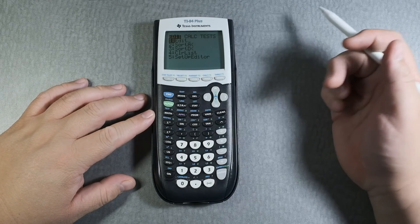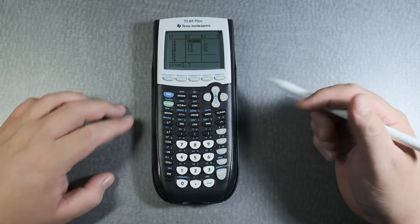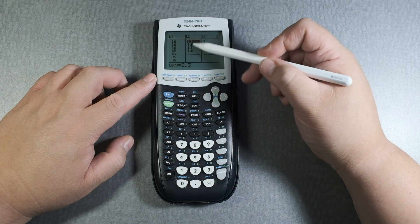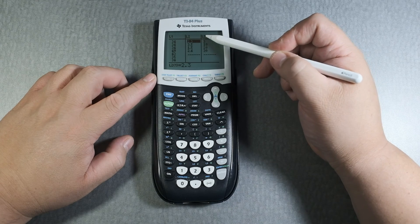All right, so let's go to stat, let's type in our data. We're going to click on one or enter, and we're going to use this data right here—L2 and L3. You can think of L2 as x and L3 as y.